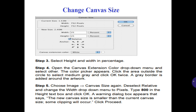Step number 5: choose Image > Canvas Size again. Select Relative and change the width drop-down menu to pixels. Type 800 in the height box and then click OK. A warning dialog box appears saying the new canvas size is smaller than the current canvas size — some clipping will occur. Click Proceed.